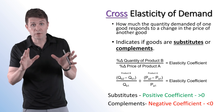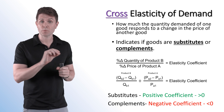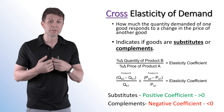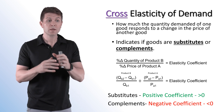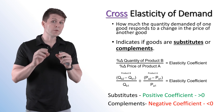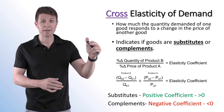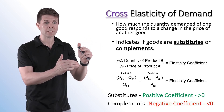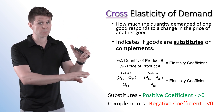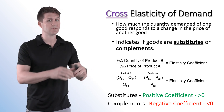Cross elasticity of demand, or cross price elasticity of demand, looks at how much the quantity demanded of one good responds to a price change of another good. From this, we're going to be able to determine if goods are complements, substitutes, or completely unrelated. The formula changes up a little bit, but it's still the percentage change in the quantity demanded of one good over the percentage change in the price of another good.